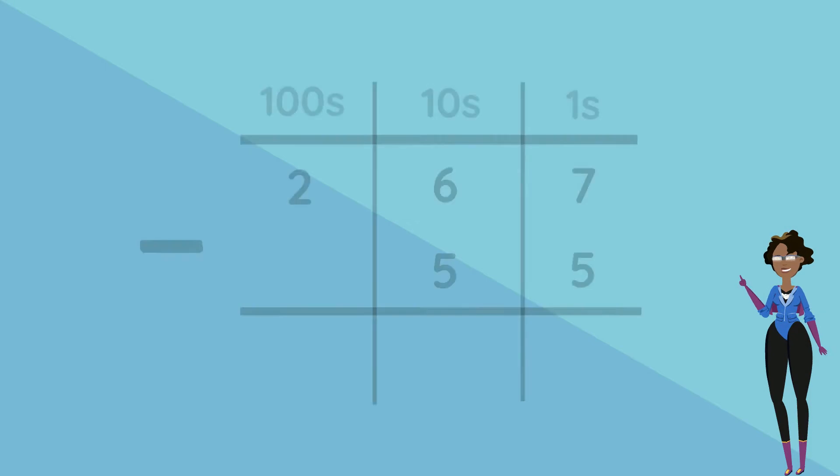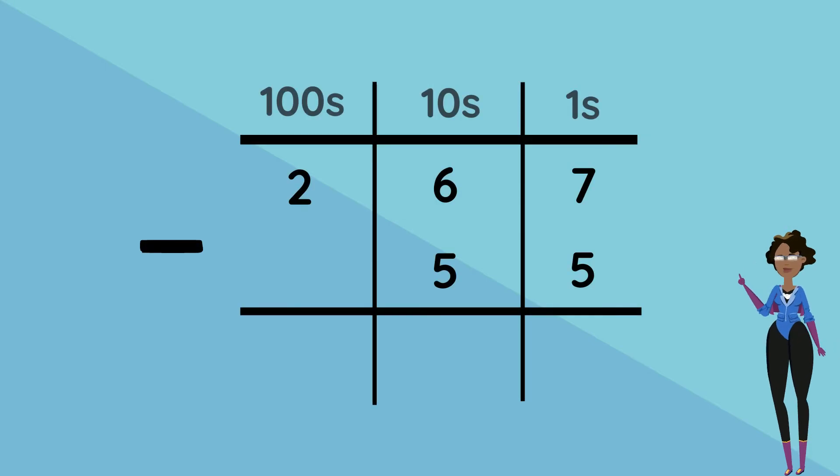Let's place our numbers in our place value chart and subtract starting with our ones column. 7 take away 5 equals 2. 6 take away 5 equals 1 and there is nothing to be subtracted in the hundreds column so we carry down the 2 to the answer section. Our answer is 212.